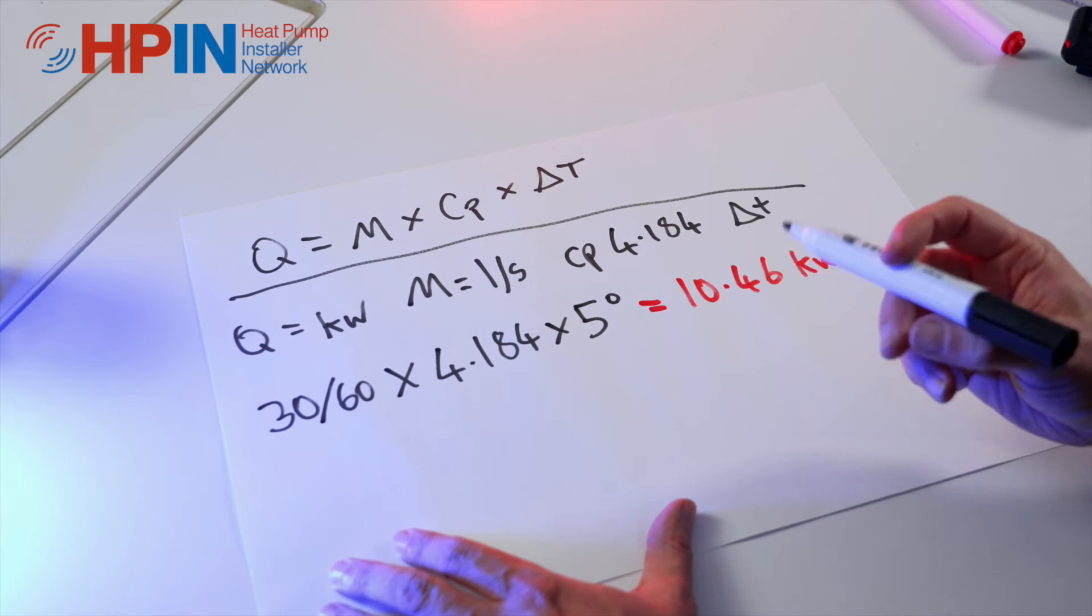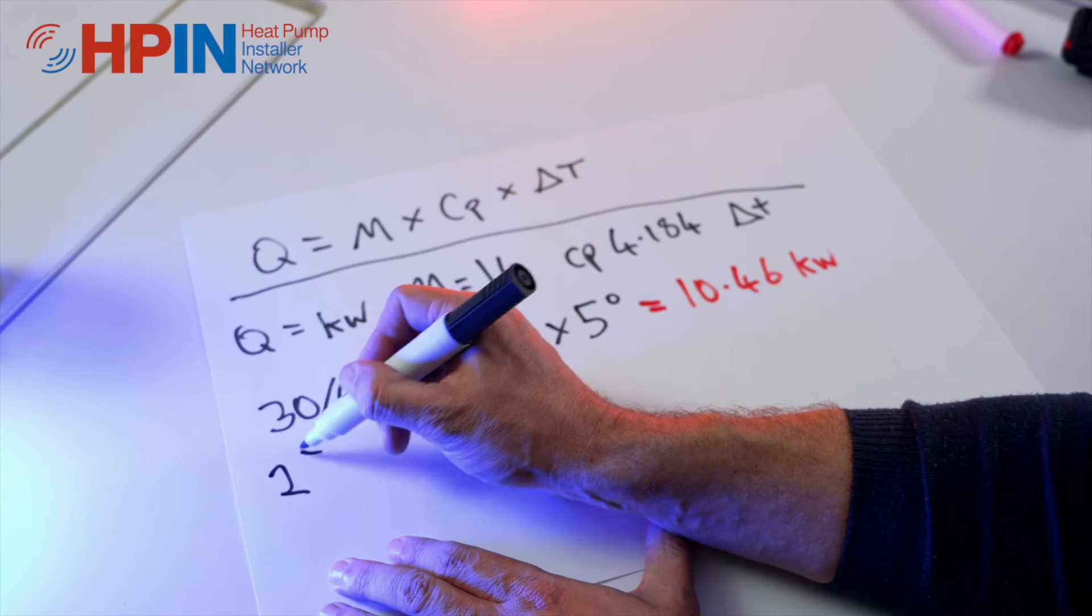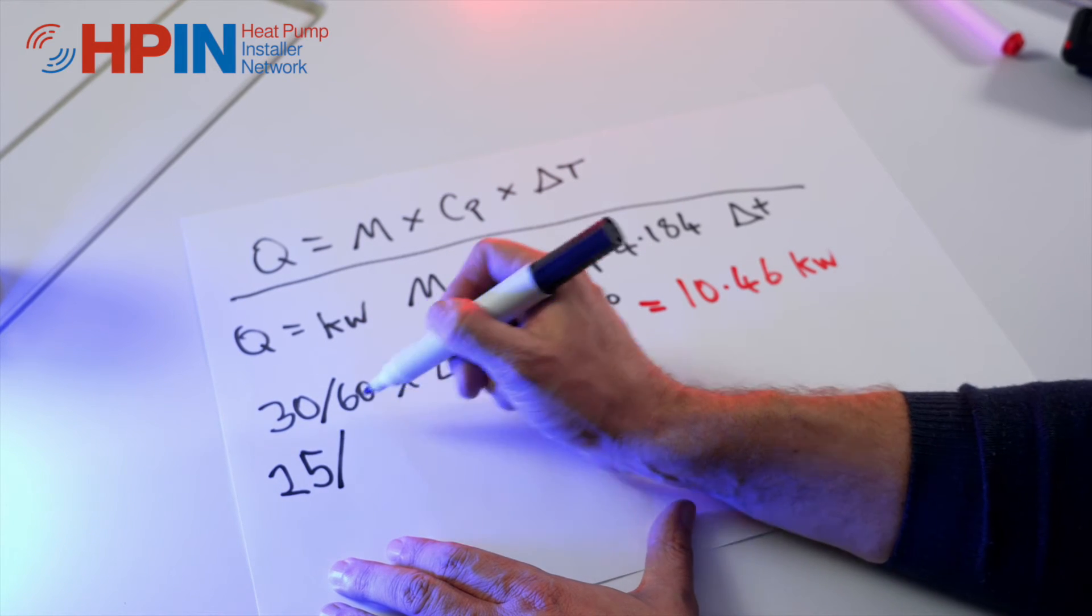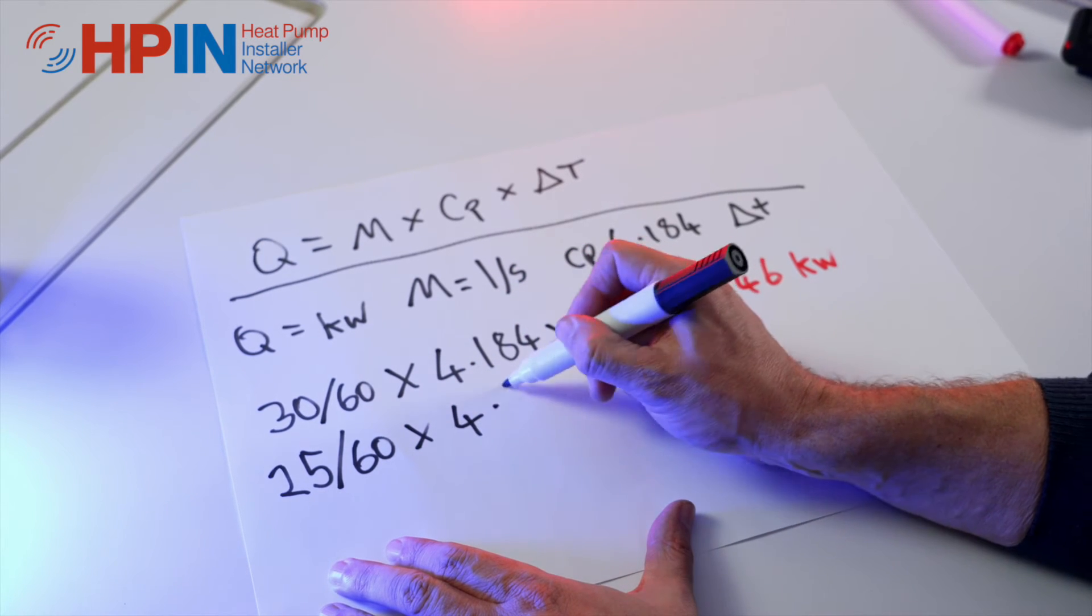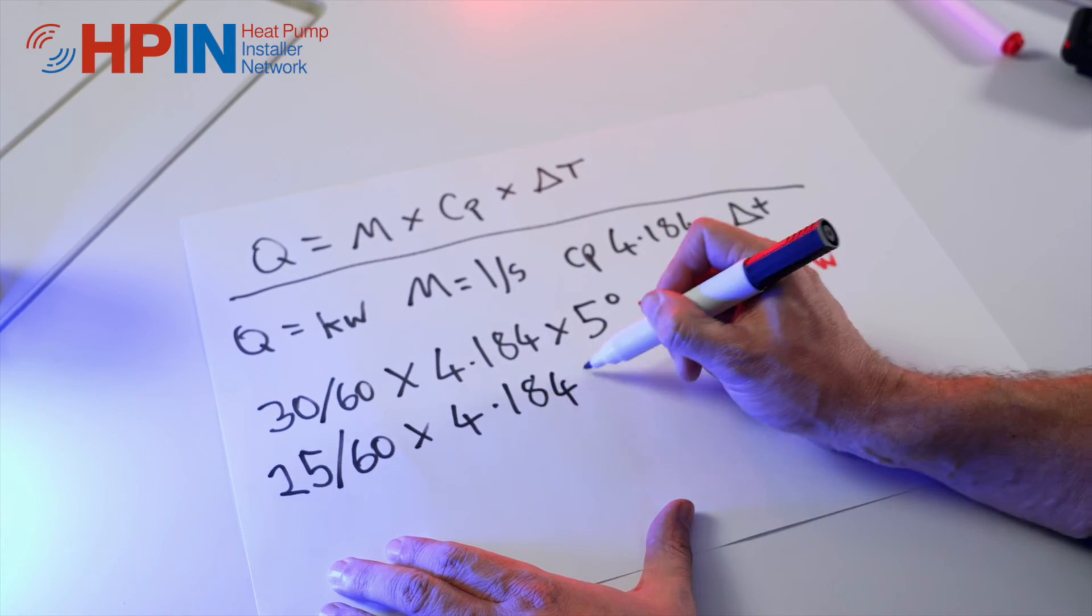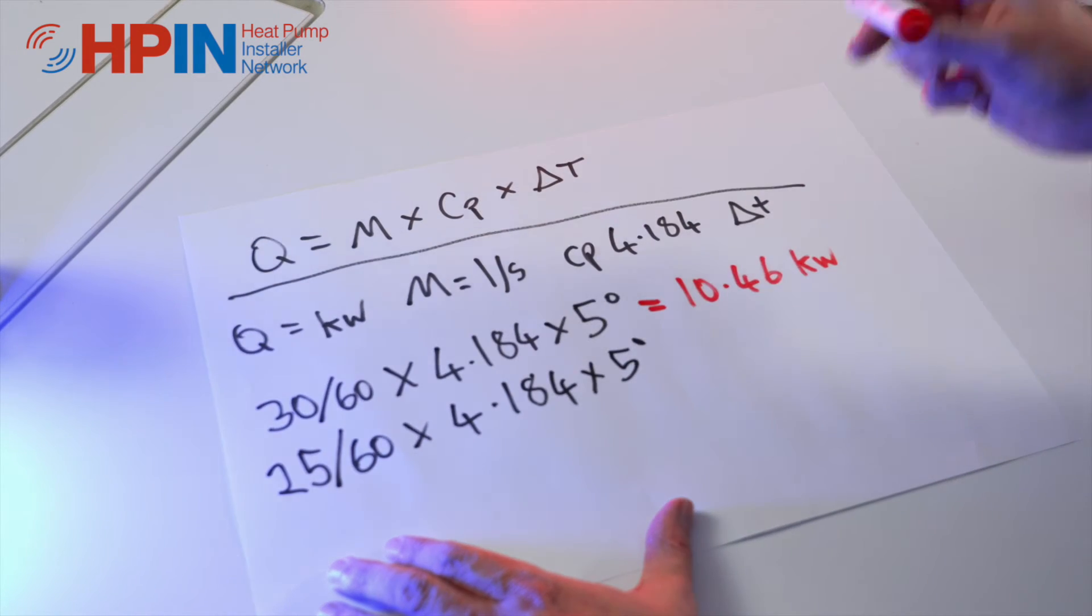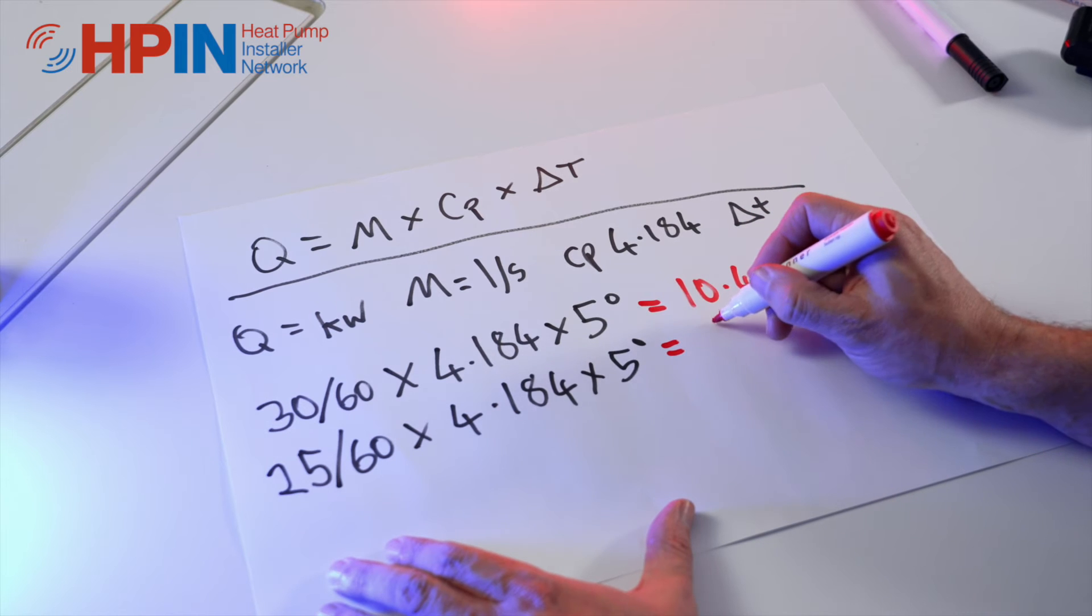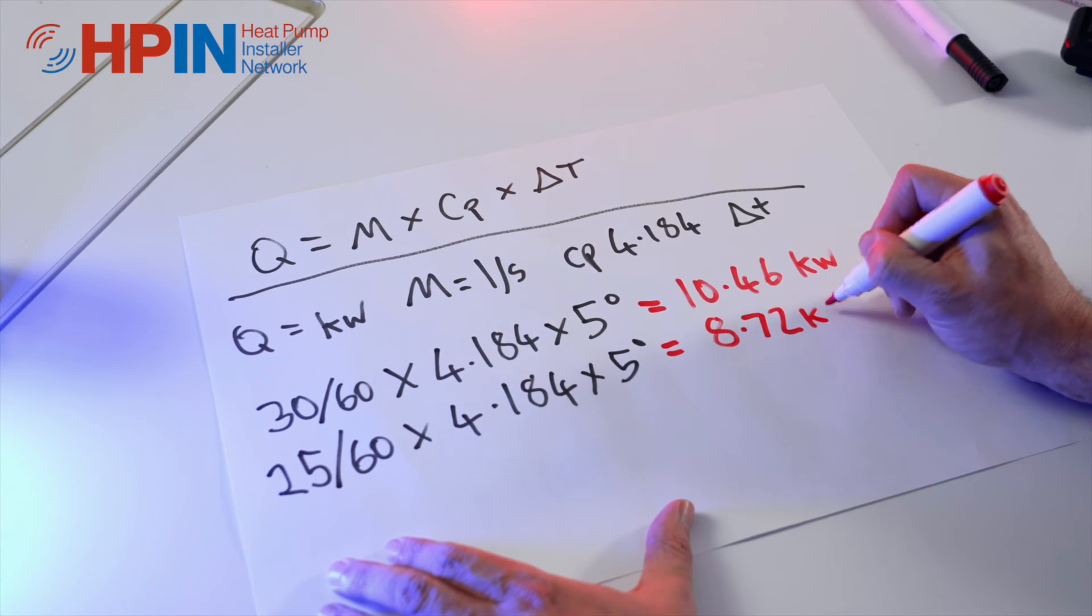So now I'm going to change the flow rate. Let's just drop it by say 5, so we've got 25. We're going to divide that by 60, times it by 4.184 times that by 5 for our delta T. And that is going to give us 8.72 kilowatts.